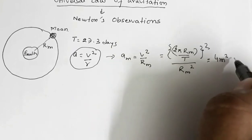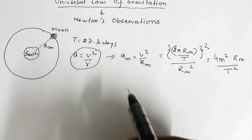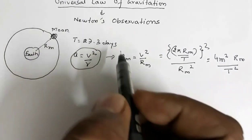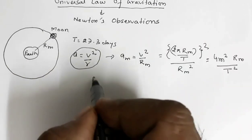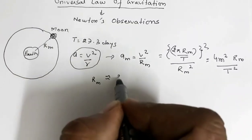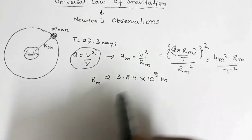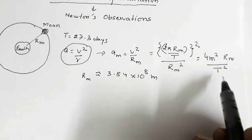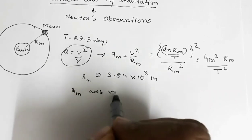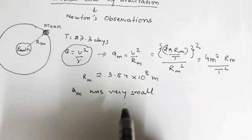So the radial acceleration of the moon is am = 4π²·rm / T². The value of T was already known as 27.3 days, and the radius of the circular path rm was also known, approximately 3.84 × 10⁸ m. By substituting these values, the acceleration of the moon am was found to be very small compared to the value of g on Earth.